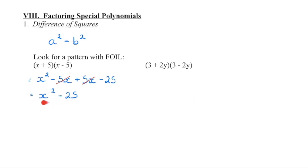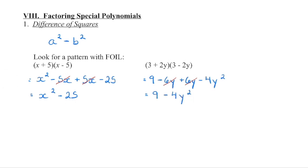This is a difference of squares — we are subtracting two perfect squares. We're going to do the same thing with the second example: two binomials multiplied together, so we foil them. 3 times 3 gives us 9, we have negative 6y plus 6y, and then minus 4y squared. When we combine like terms, negative 6y plus 6y gives us 0, leaving us with 9 minus 4y squared — a difference of squares.